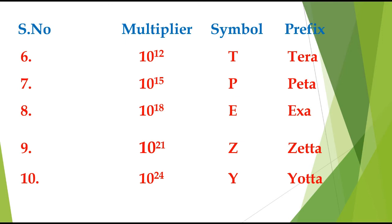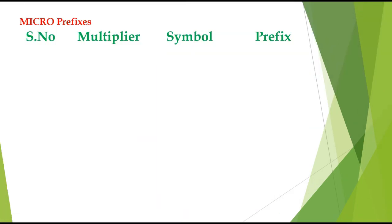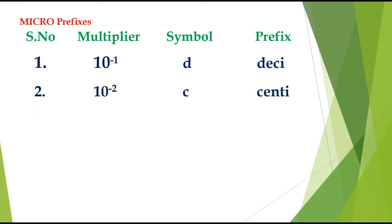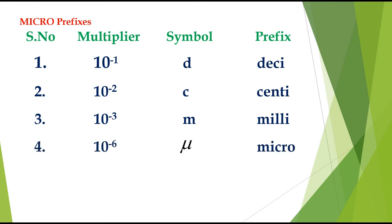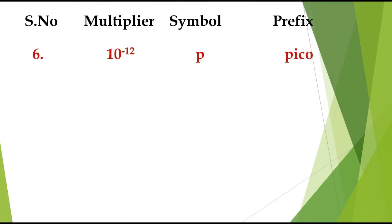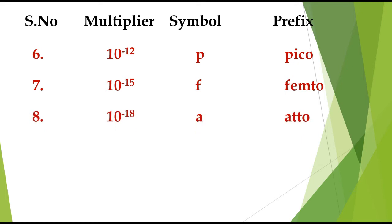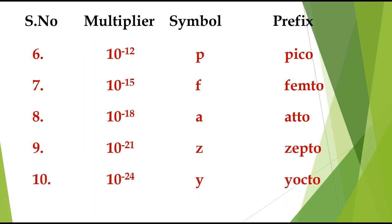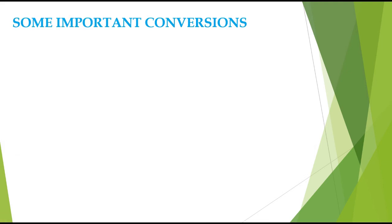Micro prefixes: 10⁻¹ — deci, symbol d. 10⁻² — centi, symbol c. 10⁻³ — milli, symbol m. 10⁻⁶ — micro, symbol μ (Greek mu). 10⁻⁹ — nano, symbol n. 10⁻¹² — pico, symbol p. 10⁻¹⁵ — femto, symbol f. 10⁻¹⁸ — atto, symbol a. 10⁻²¹ — zepto, symbol z. 10⁻²⁴ — yocto, symbol y.